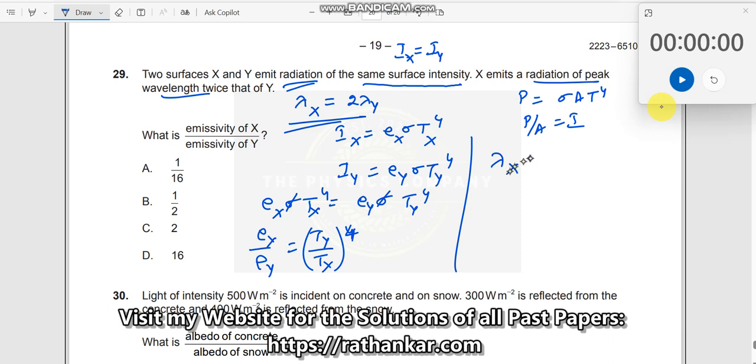It tells me, lambda x into t x is equal to lambda y into t y over here. Now, lambda x equal to 2 lambda y. Let me substitute it 2 lambda y into t x. What is it I need? I need t x is equal to lambda y into t y. So that's lambda y and lambda y goes away.